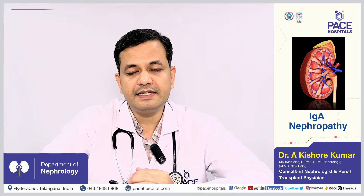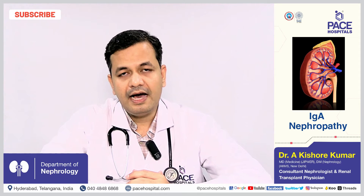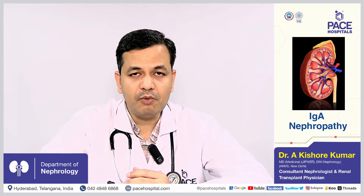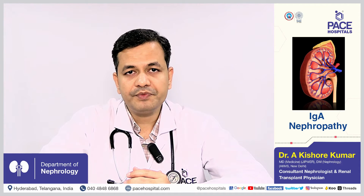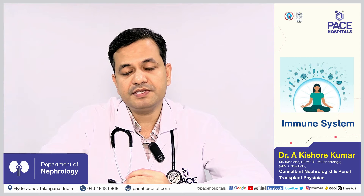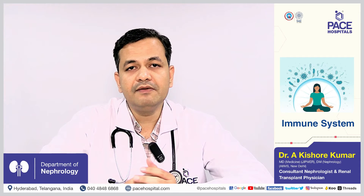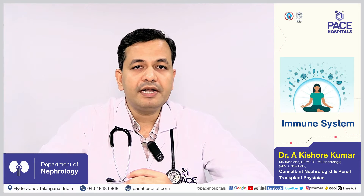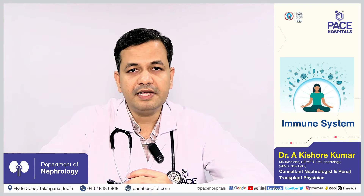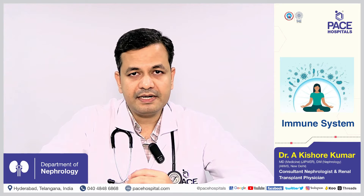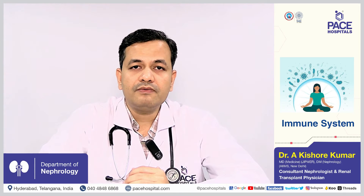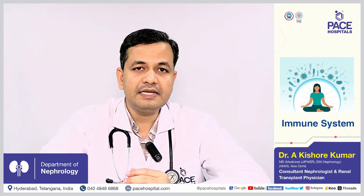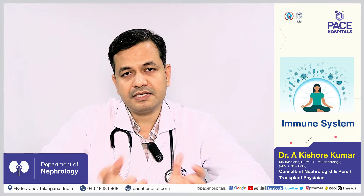Nephropathy is a condition where the kidney is damaged or affected. IgA is an immunoglobulin, also called in lay terms an antibody. This antibody, as we all know, is a part of our immune system — a system in our body which deals with infections from outside. Out of all the antibodies, IgA is one type, and in this condition this antibody is abnormally produced and its structure is also abnormal.